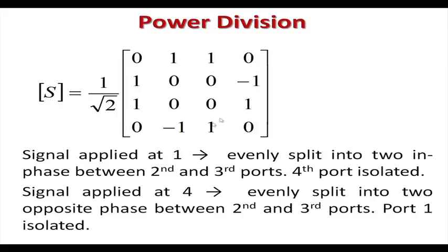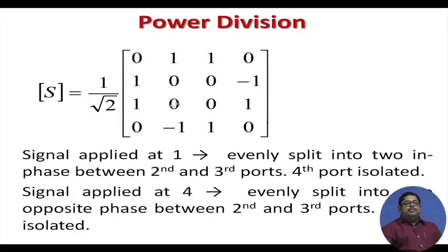So with this structure, as a power divider: signal applied at port 1 gives equal signals to ports 2 and 3 — evenly split, in phase — while port 4 is isolated. Signal applied at port 4 is evenly split into two opposite-phase signals at ports 2 and 3, with port 1 isolated. Power-wise, giving power at port 1 gives half power to port 2 and half power to port 3; similarly, giving at port 4 gives half power to port 2 and half to port 3.